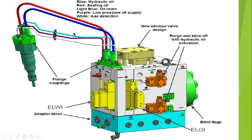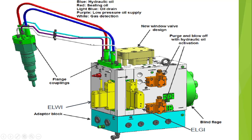The red one is basically indicating the sealing oil, the blue one is indicating the hydraulic oil, the light blue is the oil drain, and the white one is basically the gas injection. Let's now look at the sectional diagram where it will be much more clear.